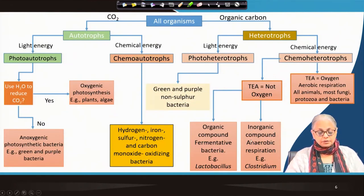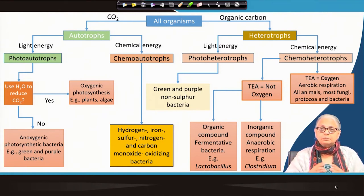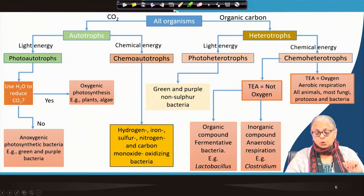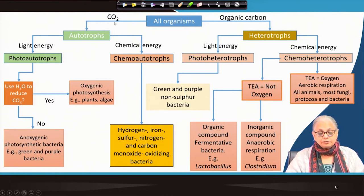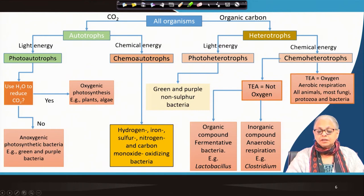This diagram covers all possible organisms — dominated by microorganisms, which frankly dominate the biodiversity of the planet. There are two sources of carbon: CO₂ or organic carbon. If utilizing CO₂, they are autotrophs; if utilizing organic carbon, they are heterotrophs. Autotrophs have two choices for energy source: light or chemical energy. If they use light they are photoautotrophs; if they use chemical compounds, they are chemoautotrophs.